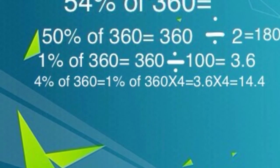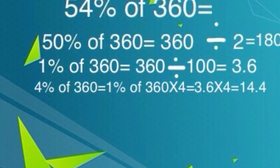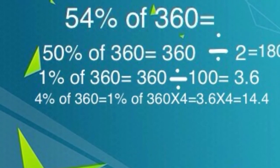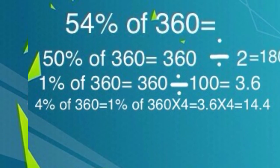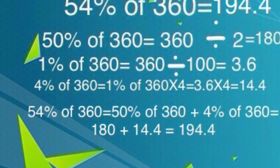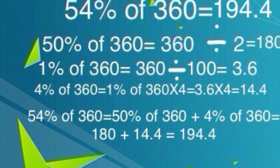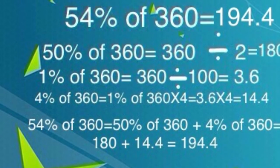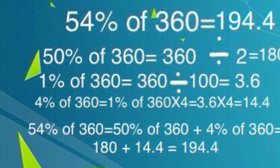4% of 360 equals 1% of 360 times 4 equals 3.6 times 4 equals 14.4. 54% of 360 equals 50% of 360 add 4% of 360 equals 180 add 14.4 equals 194.4.